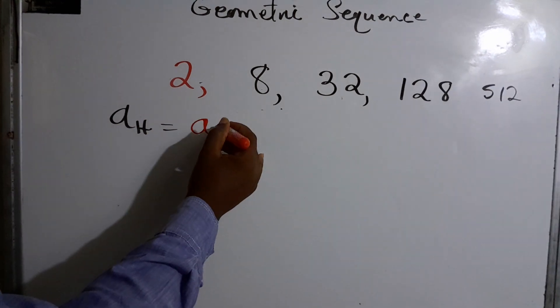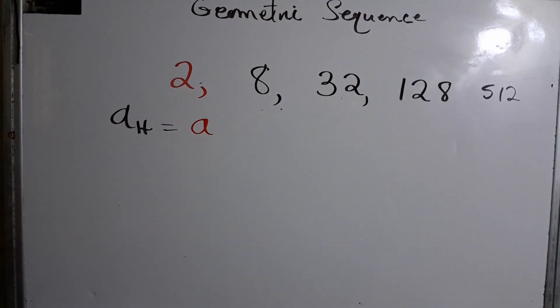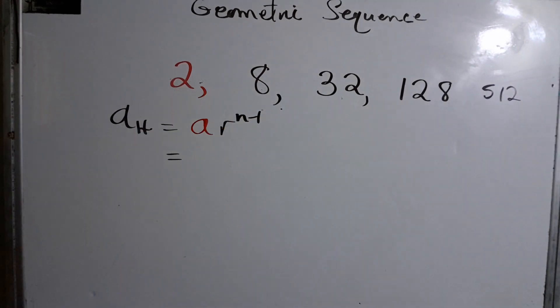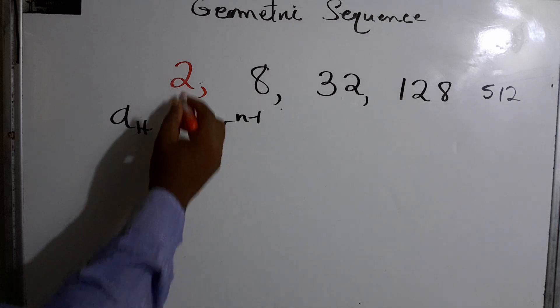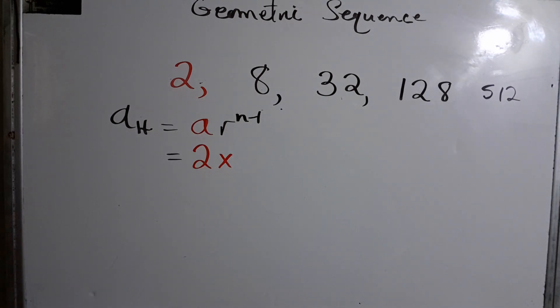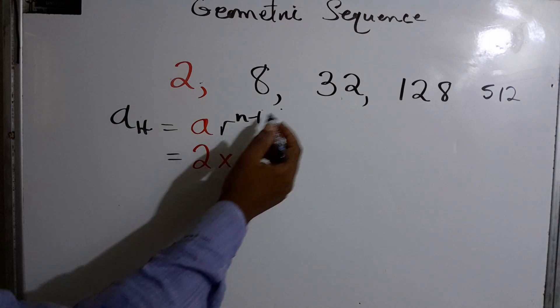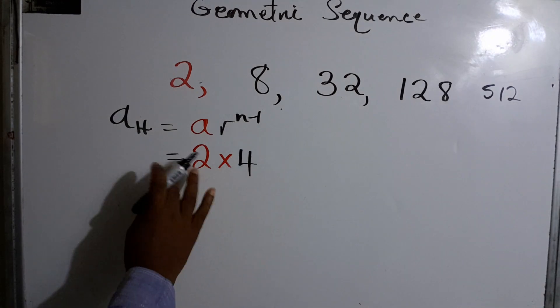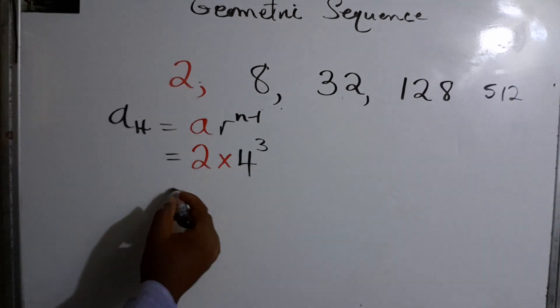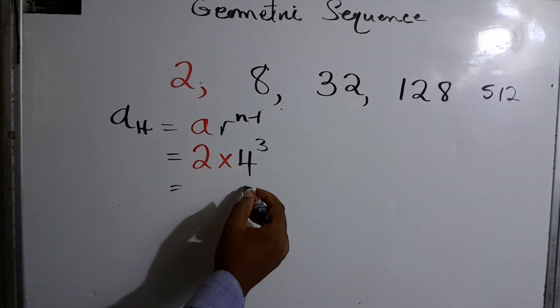So it would be a times the common ratio r to the n minus one. And of course, put things in perspective. A would be two because that's the starting point. So it's two multiplied by r, the common ratio we got was four. So it would be four to the n minus one. So four minus one would give us three. Four times four times four.